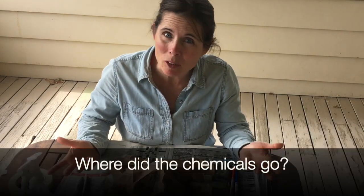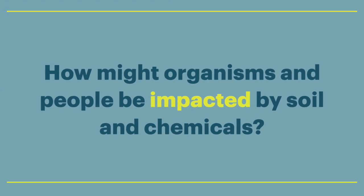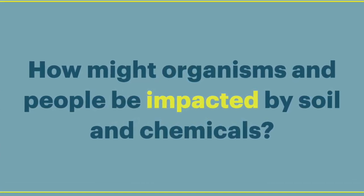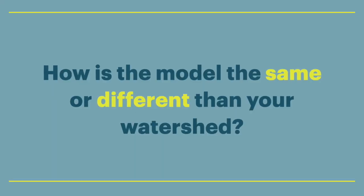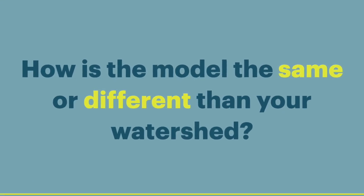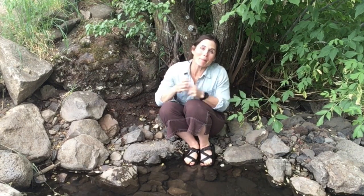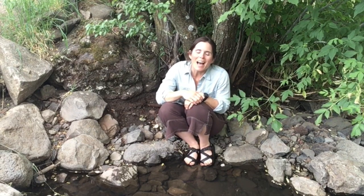Once you're done adding your colors, spray again and see what happens. Where does the soil wind up and where do the chemicals go? How might the organisms and people that live in those areas be impacted by that soil and those chemicals? The last question I'll ask is: this is a model, not the real thing — how is this model the same or different than your own watershed, wherever you might be? As we wrap up this watershed discovery challenge, I hope you know more about the watershed where you live, how water flows through the landscape, and how conditions upstream affect everything downstream. Now it's time to share your watershed observations and discoveries. Until next time, keep exploring!